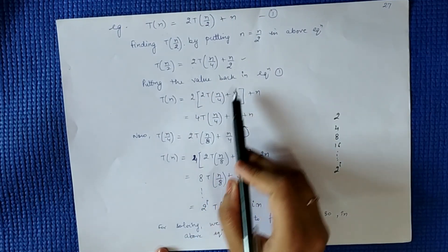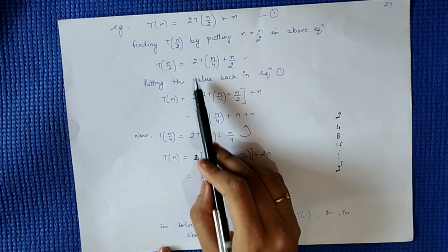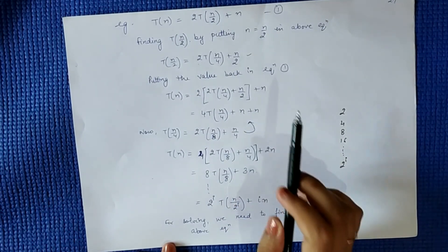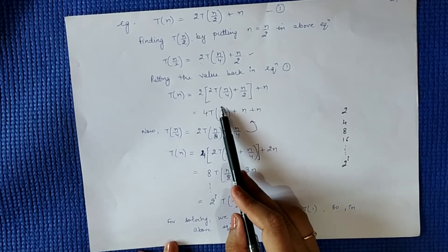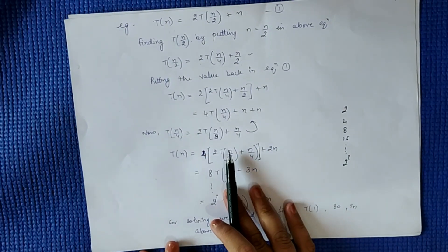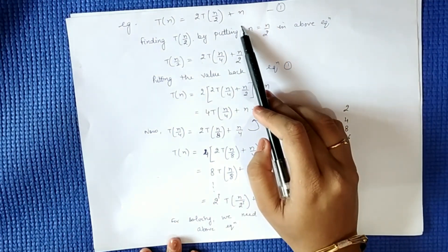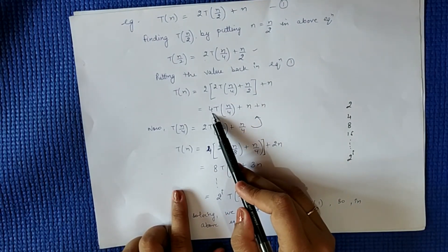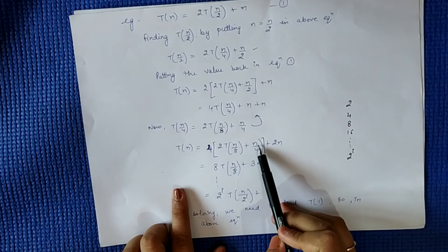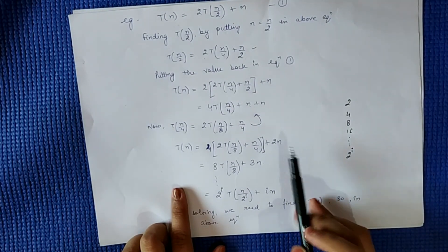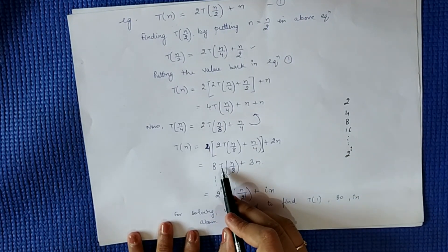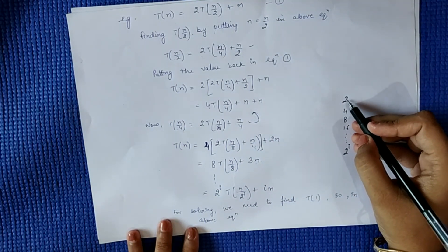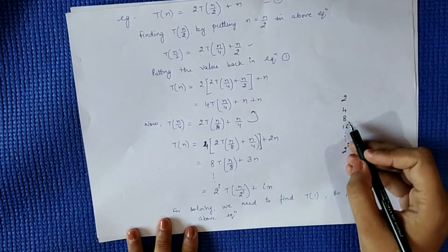Putting the value of T(n/2) back into the main equation: T(n) = 2 × (2T(n/4) + n/2) + n = 4T(n/4) + n + n = 4T(n/4) + 2n. Now finding T(n/4): putting N = n/4, we get T(n/4) = 2T(n/8) + n/4. Substituting again: T(n) = 4 × (2T(n/8) + n/4) + 2n = 8T(n/8) + n + 2n = 8T(n/8) + 3n. The pattern: first 2, then 4, then 8 — powers of 2.